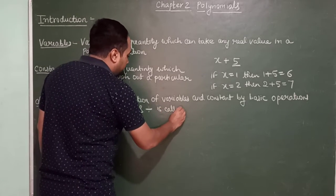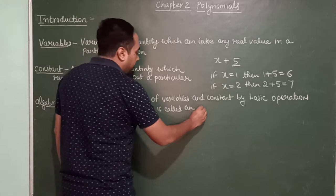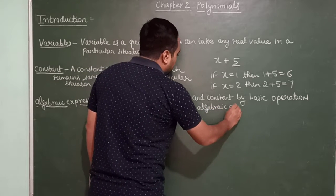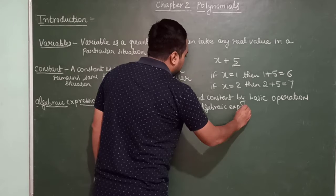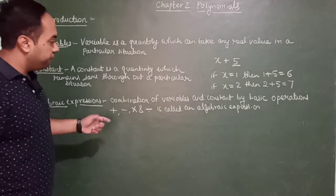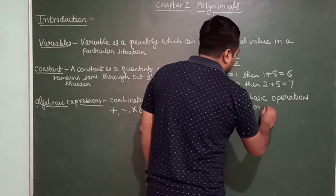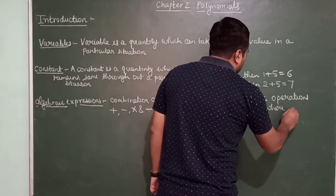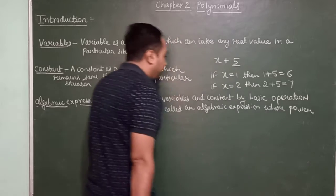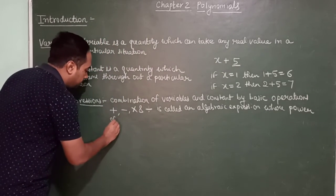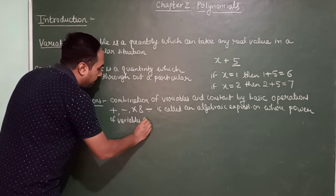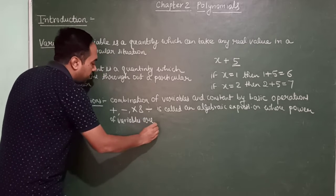So a combination of variables and constants by basic operations — plus, minus, multiplication, and division — forms an algebraic expression. One more thing to add: the power of the variable must be rational.